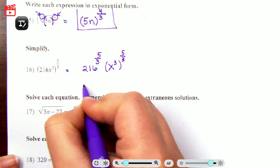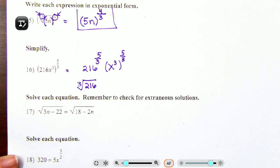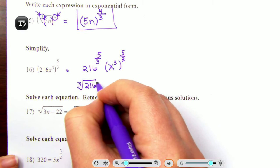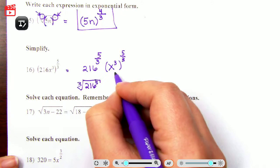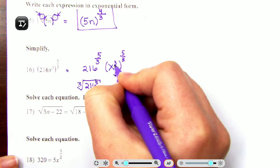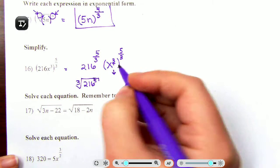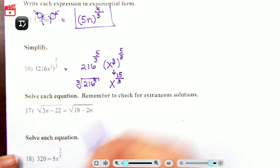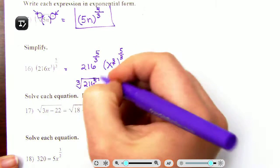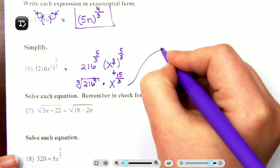Number 16, it's asking to simplify. So this is a little bit more complicated, but you're going to be okay. I'm going to show you how I would like to do it. You can do this in many different ways. I'm going to choose to use a power property and rewrite this as 216 to the five thirds and X cubed to the five thirds.